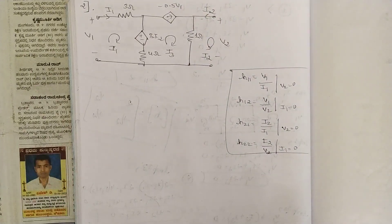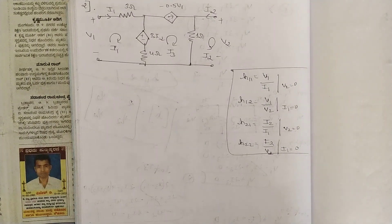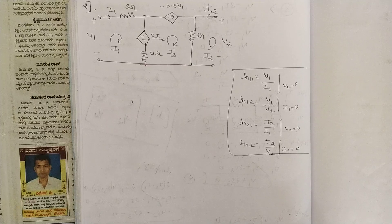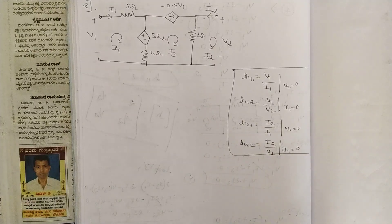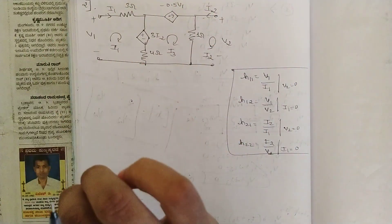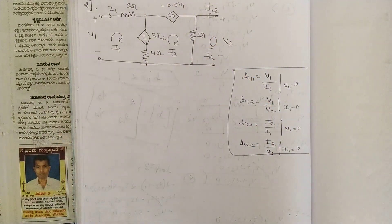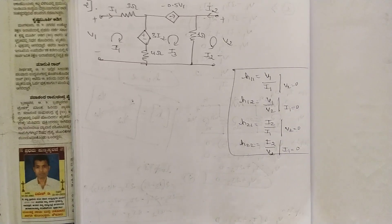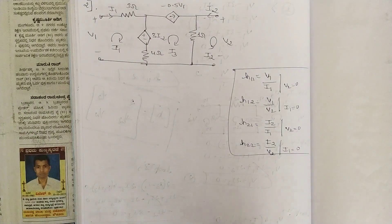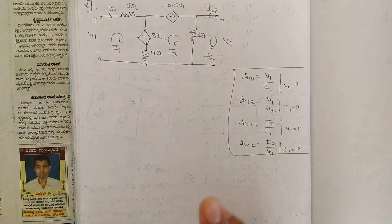Hello everyone, welcome to this new session. In our previous video we started with h parameters, discussed them in brief, and solved one critical problem. Now we are going to solve one more problem — a very complex circuit. This question came in an exam two years back and many students had doubts about solving it, but it is easy if you follow carefully. We need to find the h parameters in this circuit.